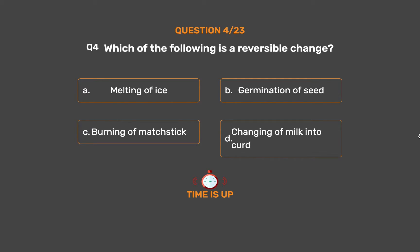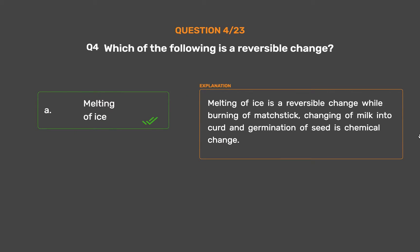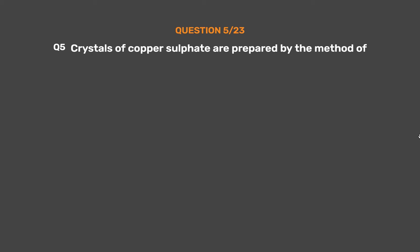The correct answer is Option A: Melting of ice. Melting of ice is a reversible change, while burning of matchstick, changing of milk into curd, and germination of seed are chemical changes.